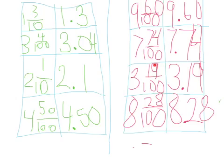On the left is 3 and 19 hundredths in fraction notation, and on the right is 3 and 19 hundredths in decimal notation. Last but not least, 8 and 28 hundredths in fraction notation, and down here is 8 and 28 hundredths in decimal notation.